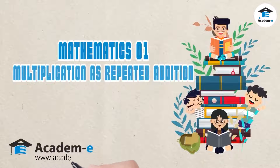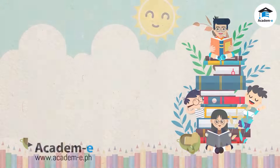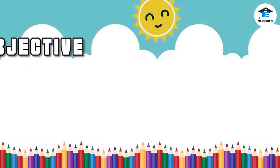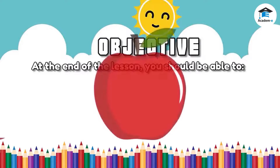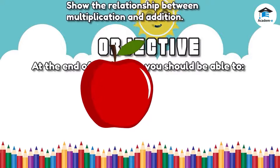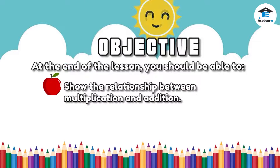Mathematics 01: Multiplication is repeated addition. Objective: At the end of the lesson, you should be able to show the relationship between multiplication and addition.